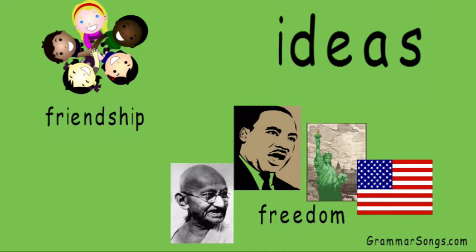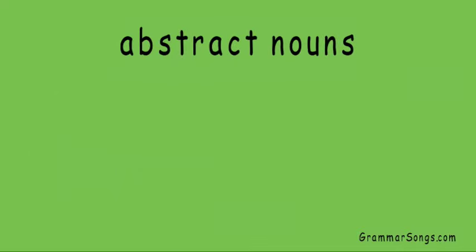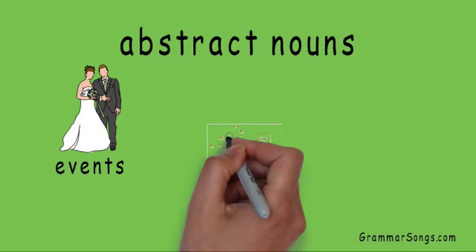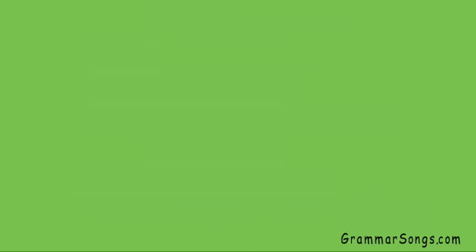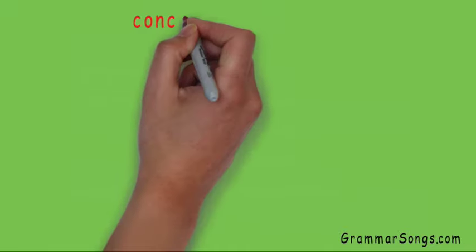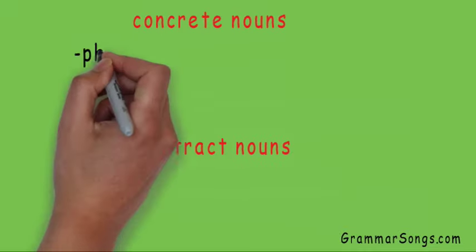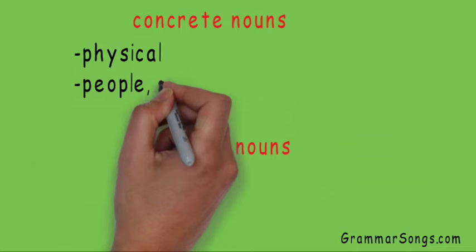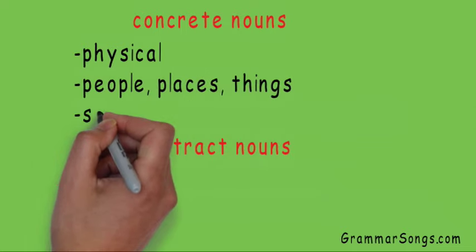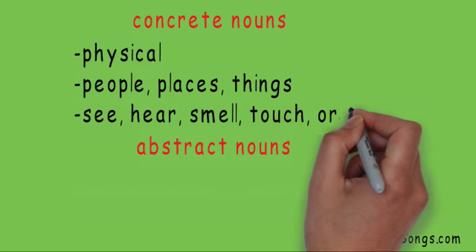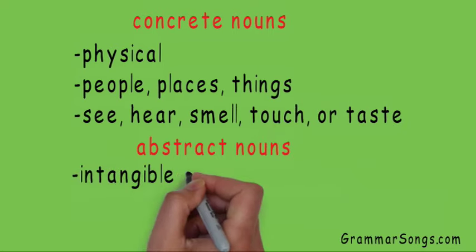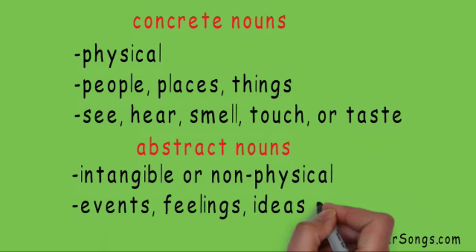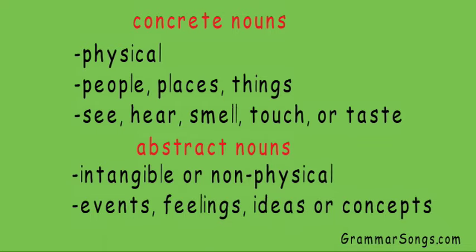Now that we've explored some abstract nouns such as events, emotions, and ideas, let's see if we can find some nouns in some sentences. We will look for nouns that are either concrete or abstract. Remember, concrete nouns are physical — they can be people, places, or things, and you can see, hear, smell, touch, or taste them. Abstract nouns are intangible or non-physical. They can be events, feelings, ideas, or concepts.